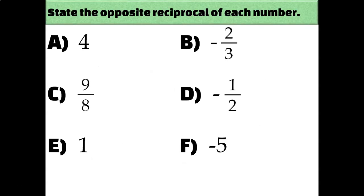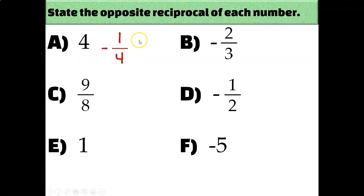Let's do a quick review of what opposite reciprocals are. Opposite means that they have opposite signs — one's positive and one's negative — and reciprocal means that they're the upside-down versions of each other. So if I want to find the opposite reciprocal of 4, since it's positive my answer has to be negative, and if I flip 4 upside down — remember anything can be written as a fraction by putting it over one — so 4 over 1 becomes 1 over 4, and opposite means it has to be negative. So 4 and negative one-fourth are opposite reciprocals.